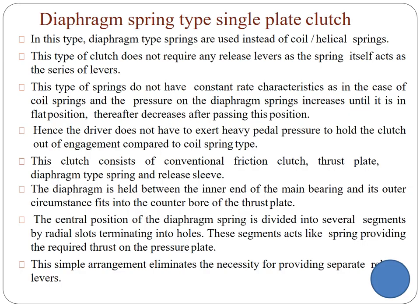The diaphragm clutch uses different spring types — coil and helical — and does not have a pedal arrangement. The force exerted on the driver shaft is handled by coil springs. These springs do not have a constant rate of characteristics: when the diaphragm spring is in the horizontal or flat position, pressure increases; if placed in a different position, pressure decreases. The diaphragm spring is attached at one end to a thrust bearing and at the other end to a pressure plate, which is attached to the flywheel.